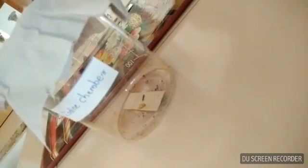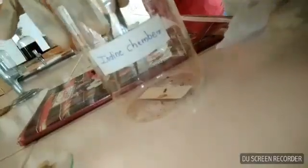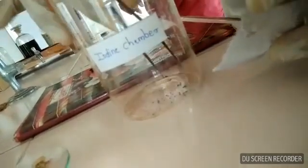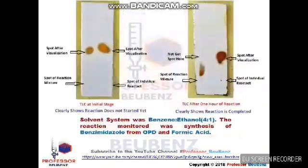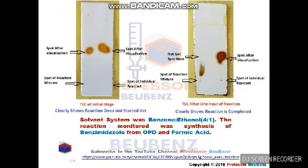After placing the TLC into the iodine chamber, the spots get visualized. The same procedure was performed both at the initial stage and after one hour of reaction. Looking at the initial-stage TLC, both spots — the starting material and the reaction mixture — are running in front of each other, clearly indicating the presence of reactant in the reaction mixture. This means the reaction has not yet started.